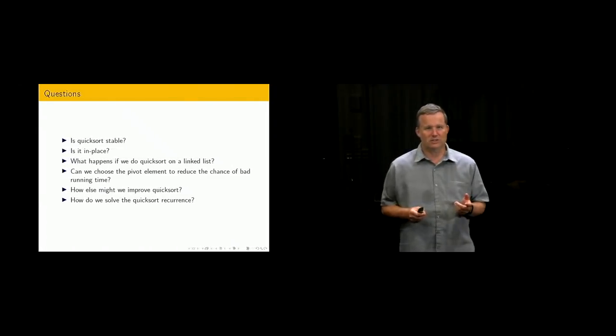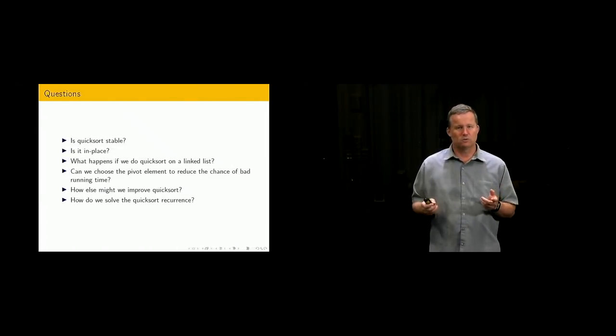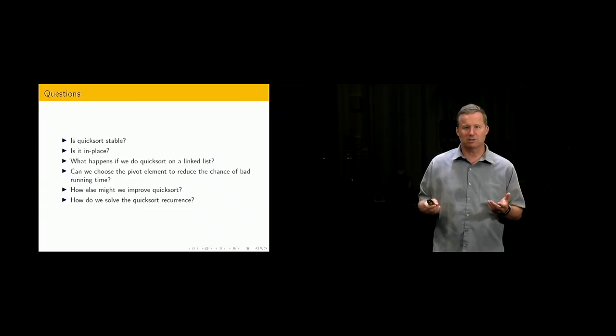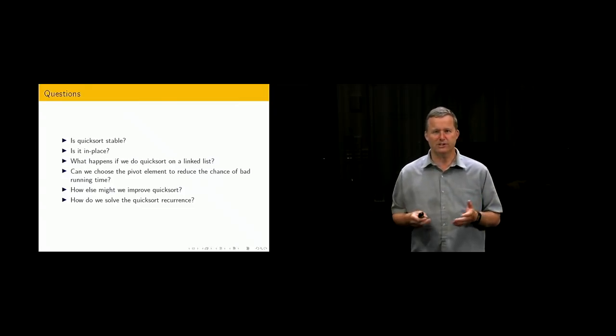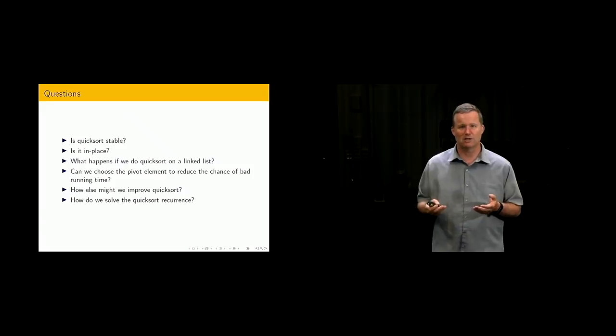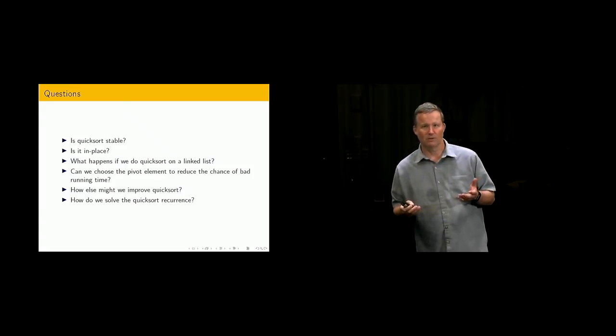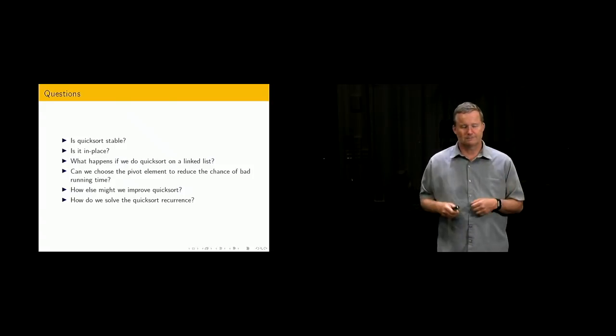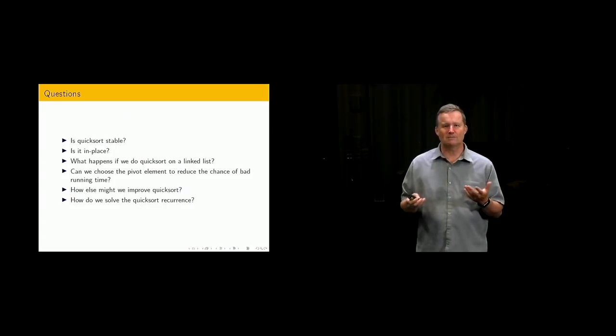So again here we are with the questions. First two standard type of questions about basic properties. Is quicksort stable? And is it in place? Should be easy to answer if you've just stepped through the algorithm and looked at some examples. As usual we should look at the different list implementations.